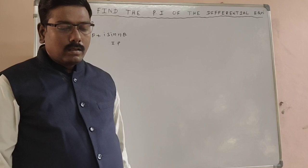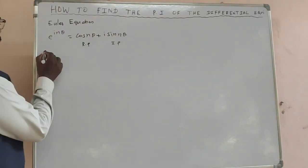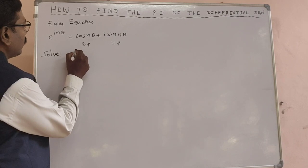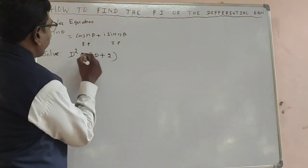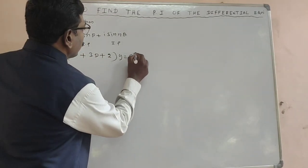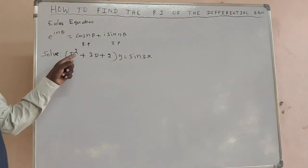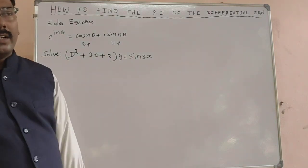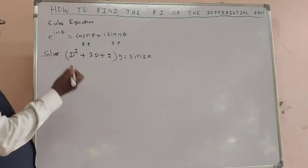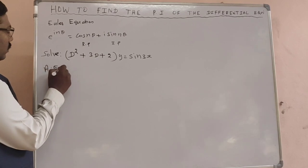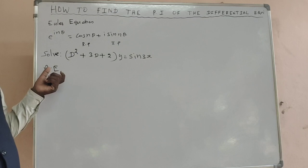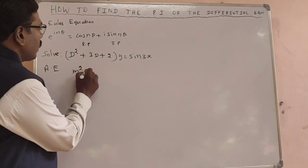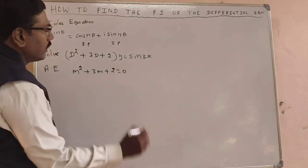Now let me solve one example using this method. The equation is: (d² + 3d + 2)y = sin(3x). First, to solve, we have to find the complementary function. Write the auxiliary equation by replacing d by m. So the auxiliary equation (AE) gives us m² + 3m + 2 = 0.